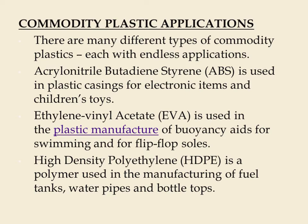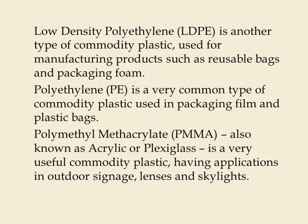Acrylonitrile butadiene styrene, that is ABS, is used in plastic casings for electronic items and children's toys. Ethylene vinyl acetate is used in the manufacture of buoyancy aids for swimming and flip-flop soles. High-density polyethylene, HDPE, is a polymer used in the manufacturing of fuel tanks, water pipes, and bottle tops.